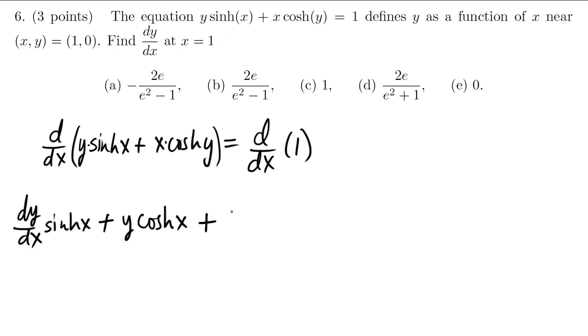The derivative of x is 1 times this second factor left alone. Then I leave x alone and I multiply by the derivative of this factor. Well, the derivative of cosh hyperbolic y is actually sinh hyperbolic y. But since it's a y derivative, I have to remember to multiply by dy/dx. Remember that the derivative of cosine is minus sine. But the derivative of cosh hyperbolic is actually just sinh hyperbolic. So there's no minus sign here. And it's equal to what? The derivative of 1 is just 0.